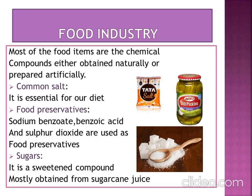Food Industry: Some useful compounds used in the food industry are common salt, food preservatives, and sugars. Common salt is essential for our diet and is used as a preservative in pickle and in curing meat and fish. Common chemical compounds used as food preservatives include sodium benzoate, benzoic acid, and sulfur dioxide. Sugar is a sweetened compound mostly obtained from sugarcane juice.